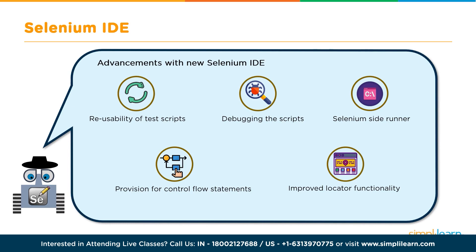They introduced a utility called Selenium Side Runner that allows running test cases on any browser. You can create automation in IDE on Chrome or Firefox, then use the Side Runner from command prompt to execute on any browser, achieving cross-browser testing. Control flow statements — if/else, while loops, switch cases — are now available out of the box. The IDE also has improved locator functionality with a failover mechanism for locating elements on web pages.